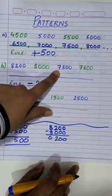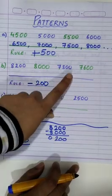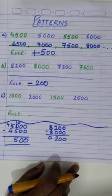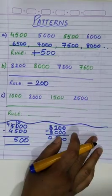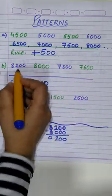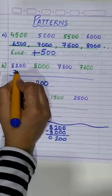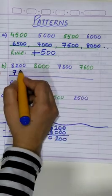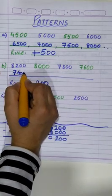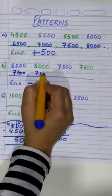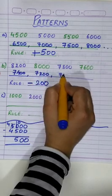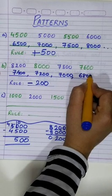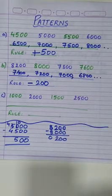8,000 minus 200 will be 7,800. This minus 200 will be 7,600. So you have to subtract 200 from each given number, and our next numbers will be 7,400, then 7,200, then 7,000, then 6,800, and so on. Easy!